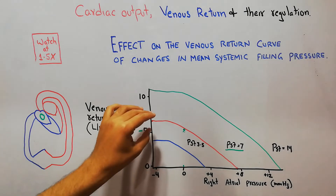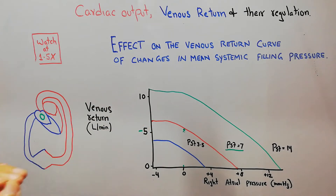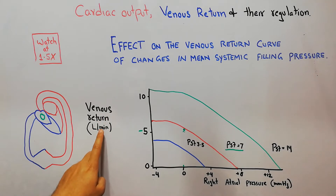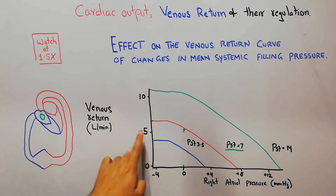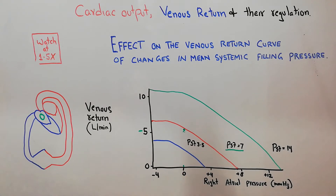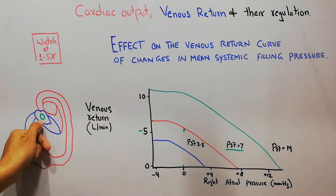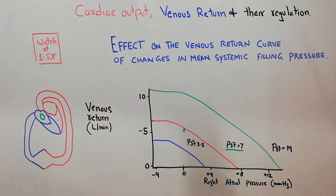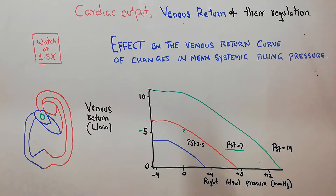We will first discuss the normal venous return curve. Normally in a normal human being with normal blood volume, normal heartbeat, and normal everything, we have a venous return of around 5 litres per minute at a right atrial pressure of 0 mmHg. This red curve is basically showing the normal venous return, and we have a normal mean systemic filling pressure.